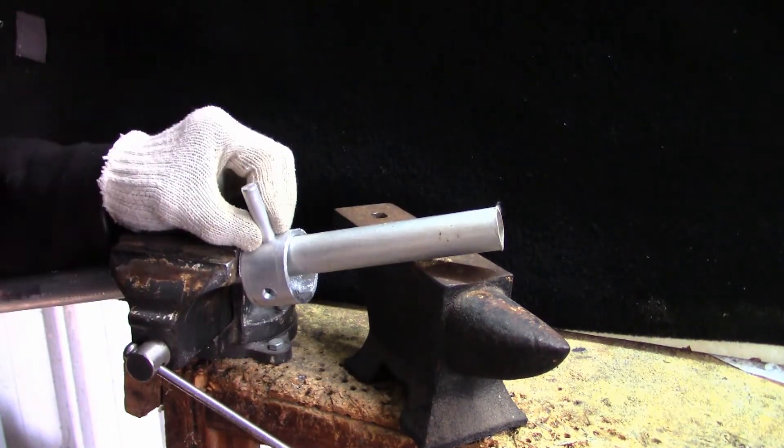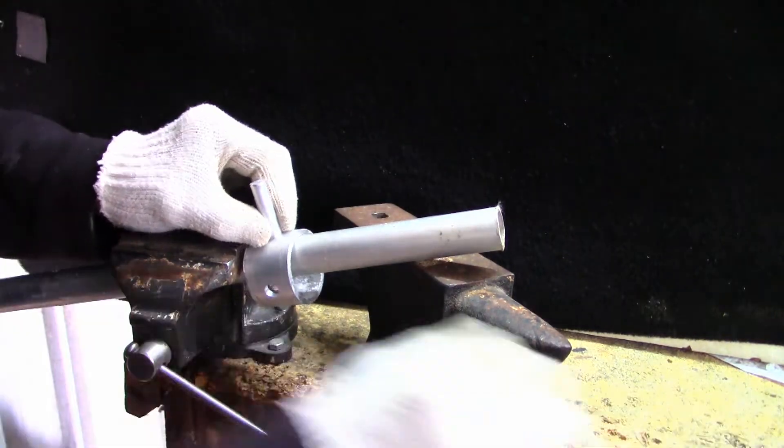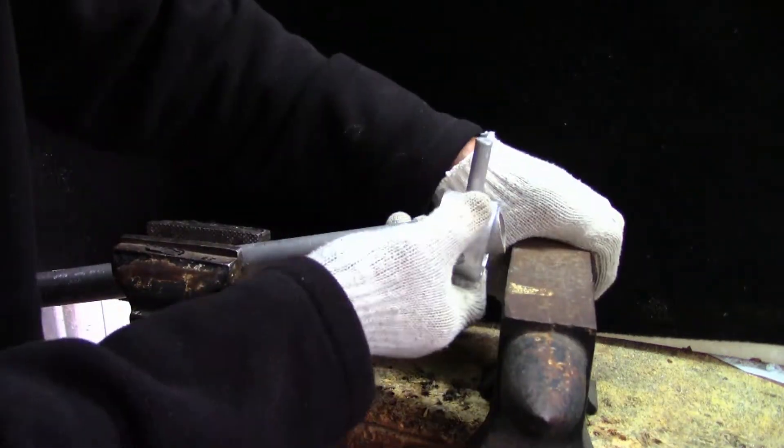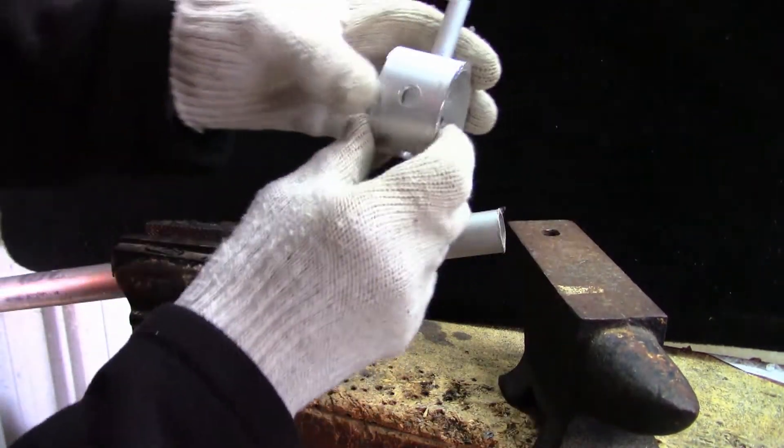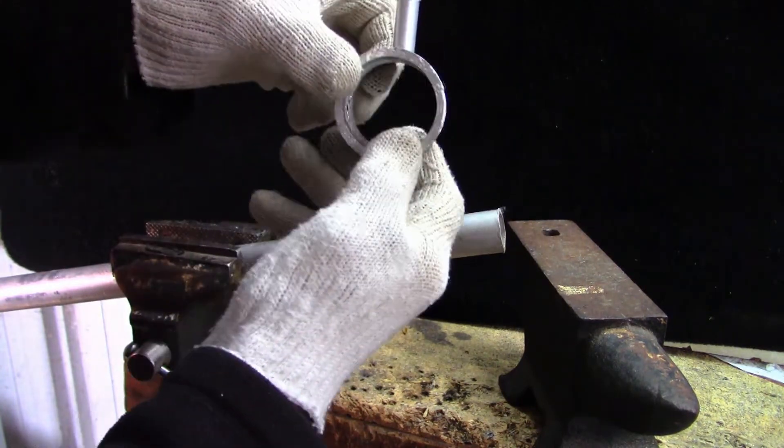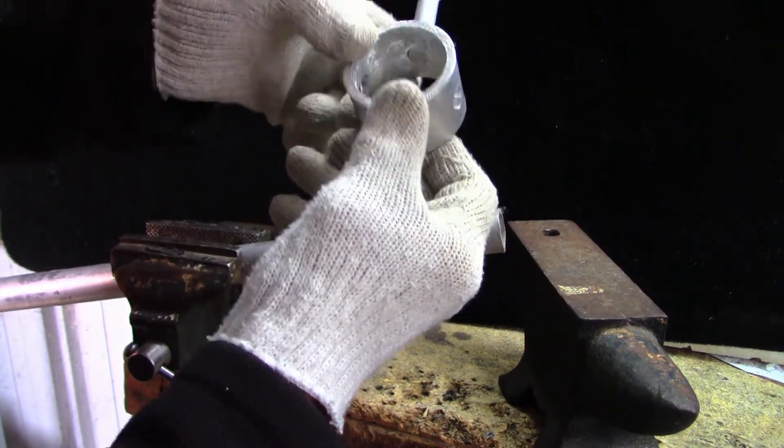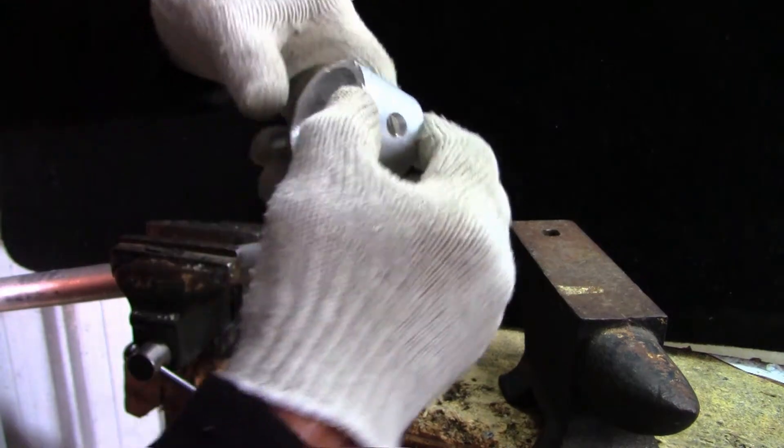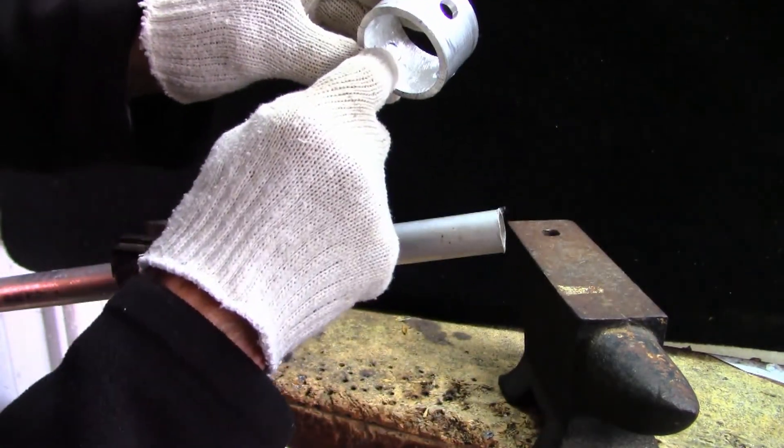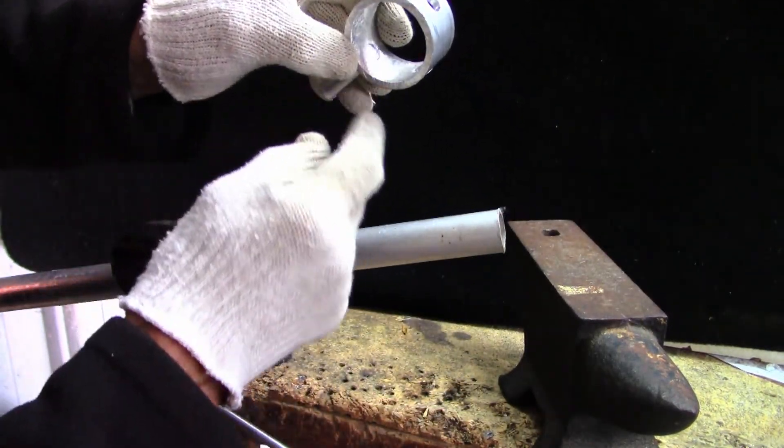That's how we've done it. I'll just show you - you can see that the post has gone flush with the hub on the inside.